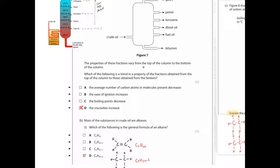The properties of these fractions vary from the top of the column to the bottom. Which of the following is a trend in property of fractions obtained from the top to those obtained from the bottom? The average number of carbon atoms decreases - no, it's the other way around. The ease of ignition increases - no, it's easier to ignite smaller molecules. The boiling point decreases - no, again, the reverse is true. The viscosity increases - that's true.